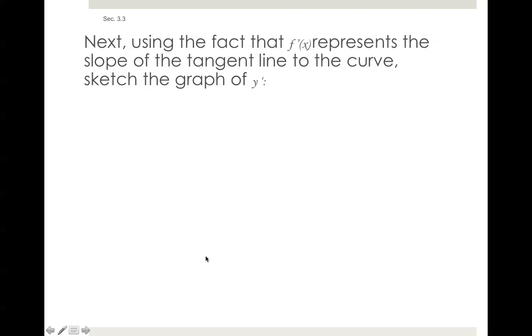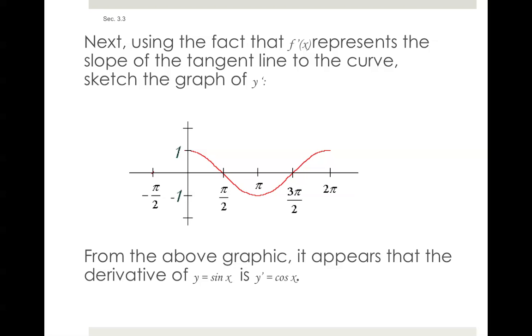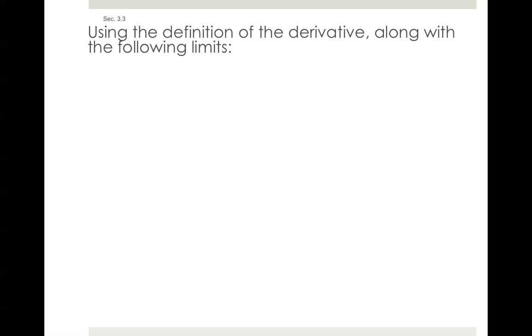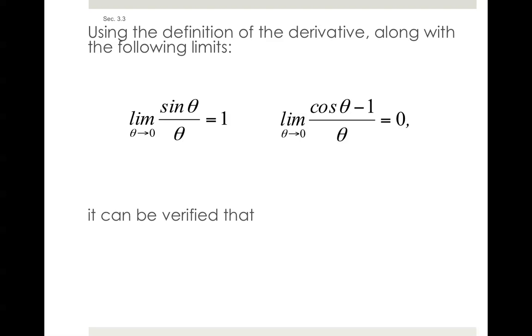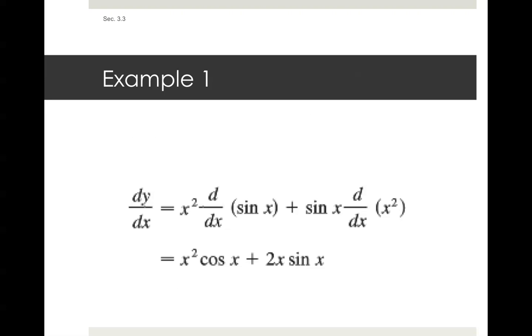Using the fact that f prime of x represents the slope of the tangent line to the curve, sketch the graph of y prime, and there it is. From the above graphic, it appears that the derivative of y equals sine x is cosine x. Using the definition of the derivative, along with the following limits: limit as theta approaches 0 of sine theta over theta equals 1, very important. And limit as theta approaches 0, cosine theta minus 1 divided by theta equals 0. It can be verified that the derivative of sine x equals cosine of x.